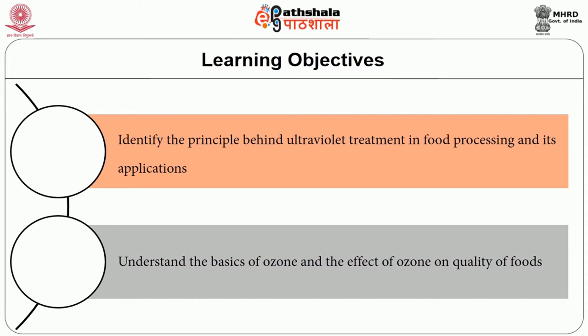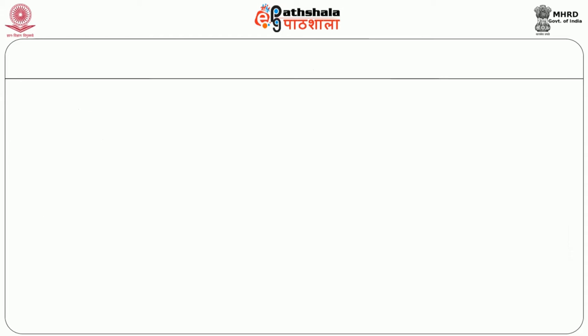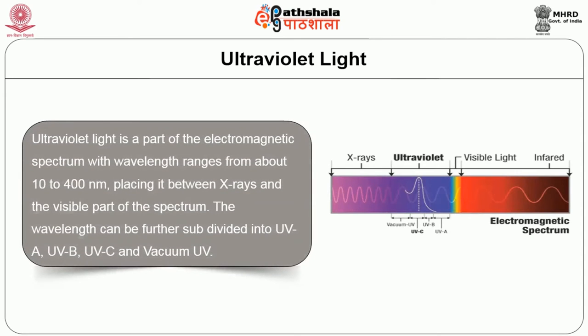First, we will see about ultraviolet light. Ultraviolet light is a part of the electromagnetic spectrum with a wavelength ranging from about 10 to 400 nanometers, placing it between the x-rays and the visible part of the spectrum.